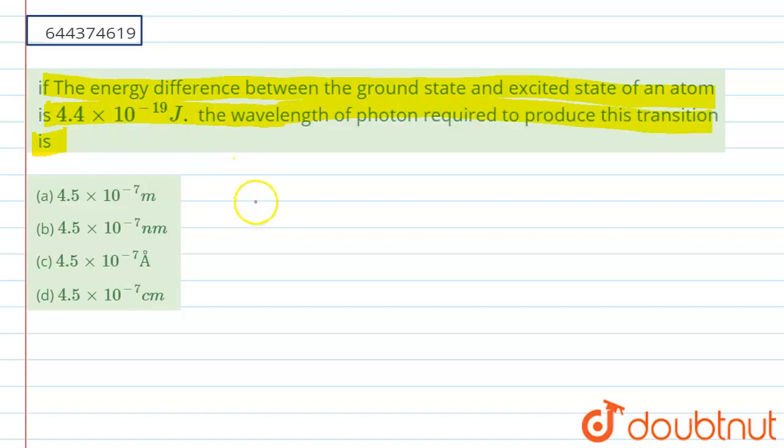That is ΔE, and ΔE is equals to hc by λ. So this is the relation between the energy difference and the wavelength, that is, it is inversely proportional.